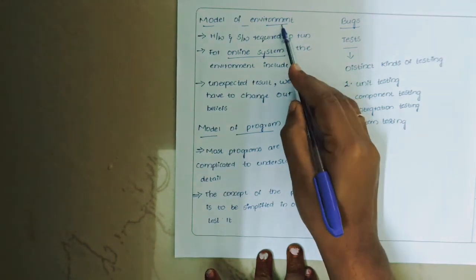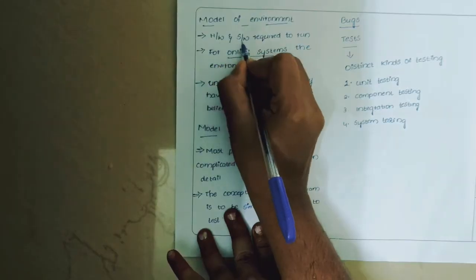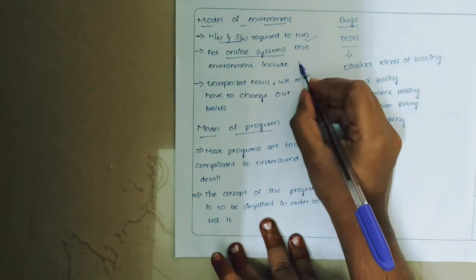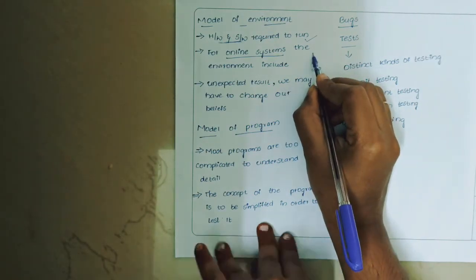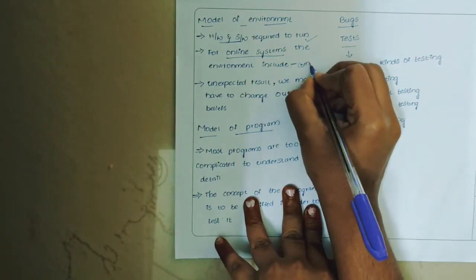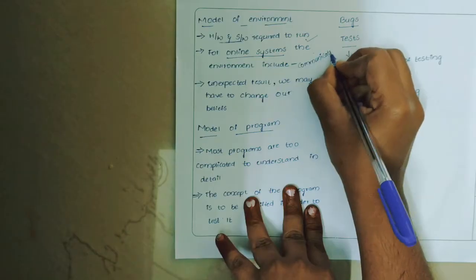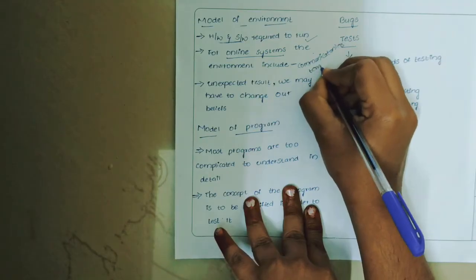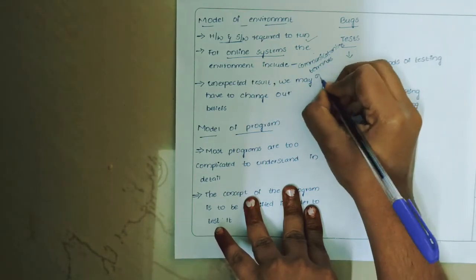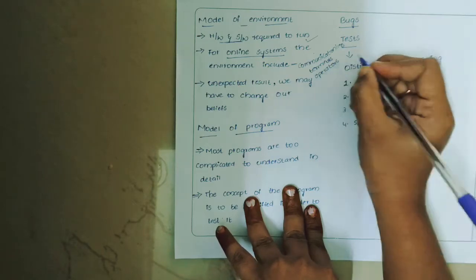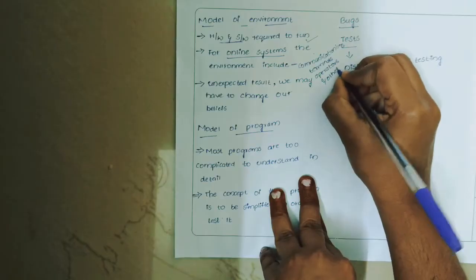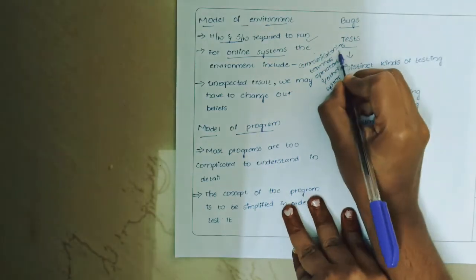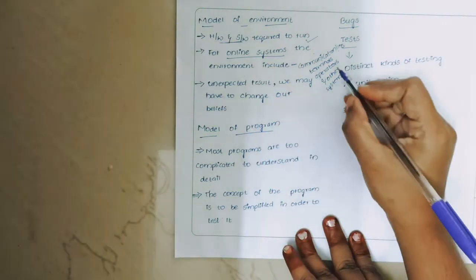A program environment is the hardware and software required to run the program. For online systems, the environment may include communication lines and terminals. Communication lines enable communication between two systems, performing operations between them.